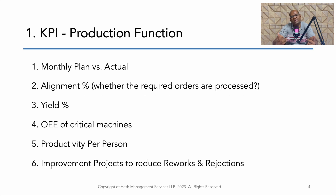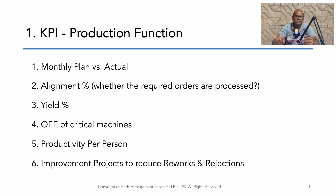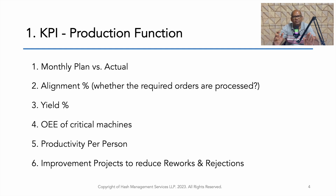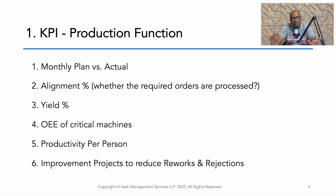Looking at KPIs for the production department, the first one can be monthly plan versus actual — what is the plan and how much we have achieved. Then alignment percentage: the customer schedule or demand is for a particular set of items — have I completed and dispatched that? If I am producing other items, the volume may be the same but we have not aligned with the customer's demand. So alignment percentage is a good KPI.